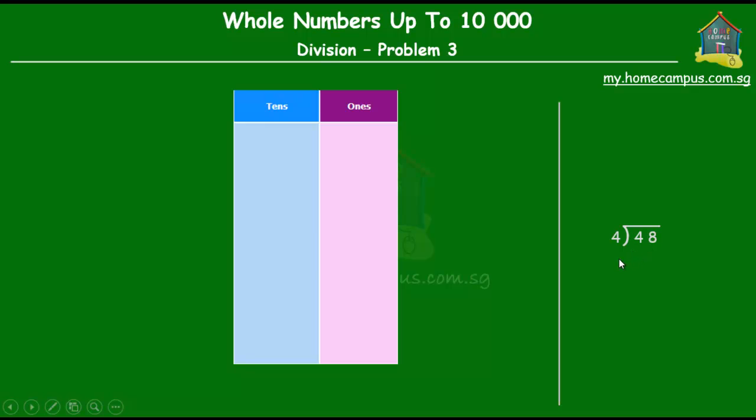Okay, so we have 48 muffins with us. Let's put those 48 muffins in the place value chart here. So there are 4 tens, right, because it's 40 and 8 ones. Okay, so that's 48 muffins, 4 tens and 8 ones.